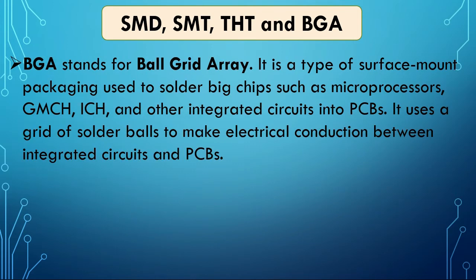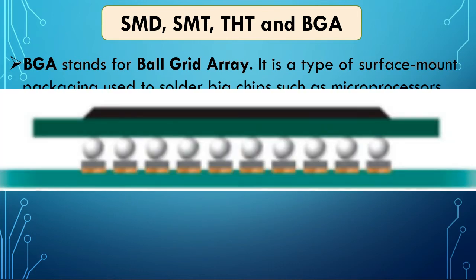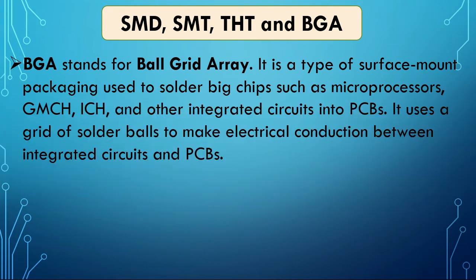BGA stands for ball grid array. It is a type of surface mount packaging used to solder big chips such as microprocessors, GMC-H or Northbridge, IC-H, and other integrated circuits into PCBs. It uses a grid of solder balls to make electrical conduction between integrated circuits and PCBs.